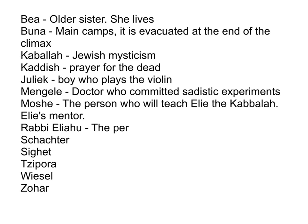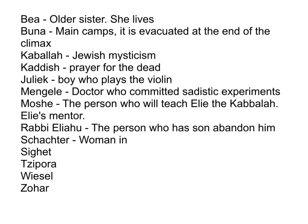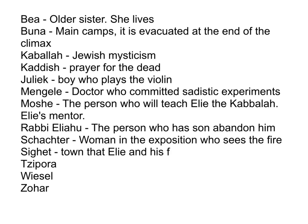Rabbi Eliahu is the person who has his son abandon him, and Elie thinks about abandoning his own father at that moment. Mrs. Schachter is the woman in the exposition of the story who sees the fire. Sighet is the town that Elie and his family live in at the beginning — again, exposition. Tispora is Elie's youngest sister.